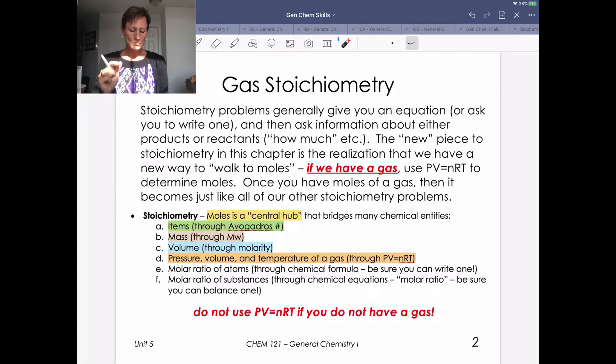Avogadro's number allows us to walk from number of entities to moles. Molecular weight, grams to moles. Molarity, volume to moles. And then again, if you know the pressure, volume, and temperature of a gas, you can use PV equals NRT to get you the quantity of that gas in moles.